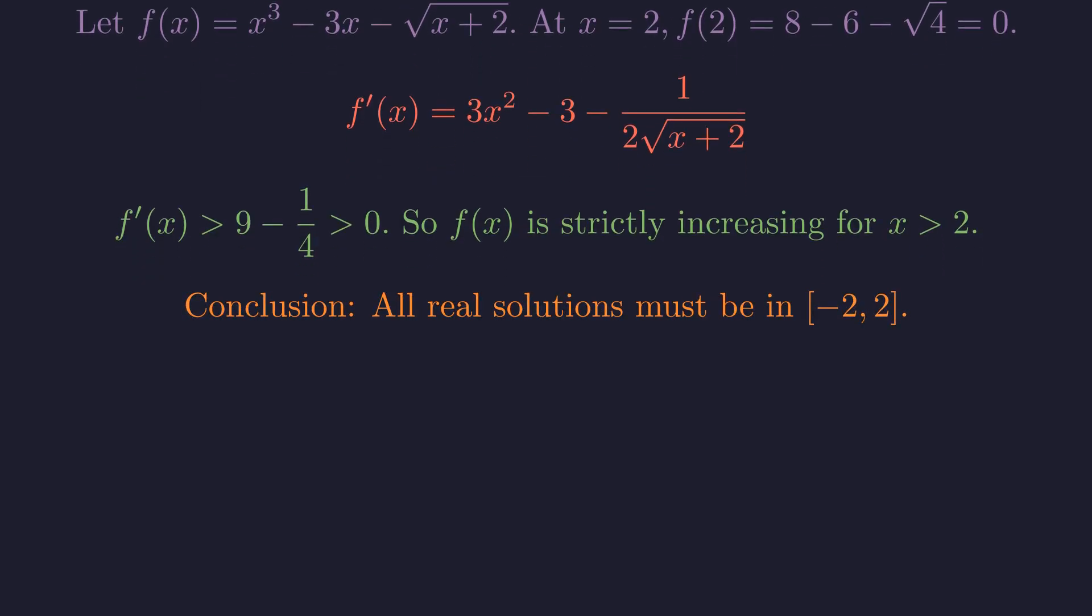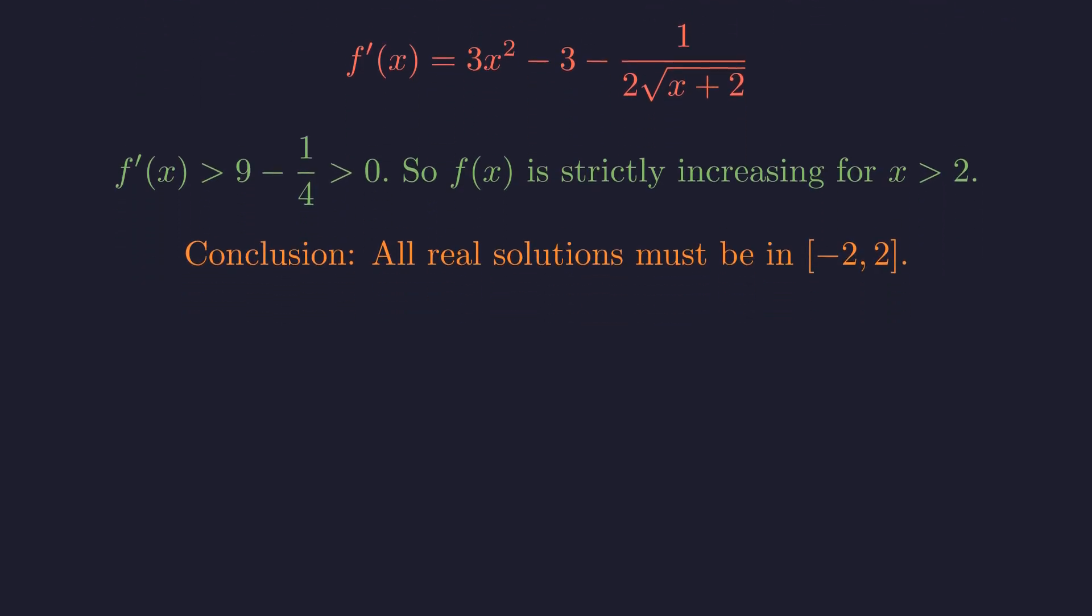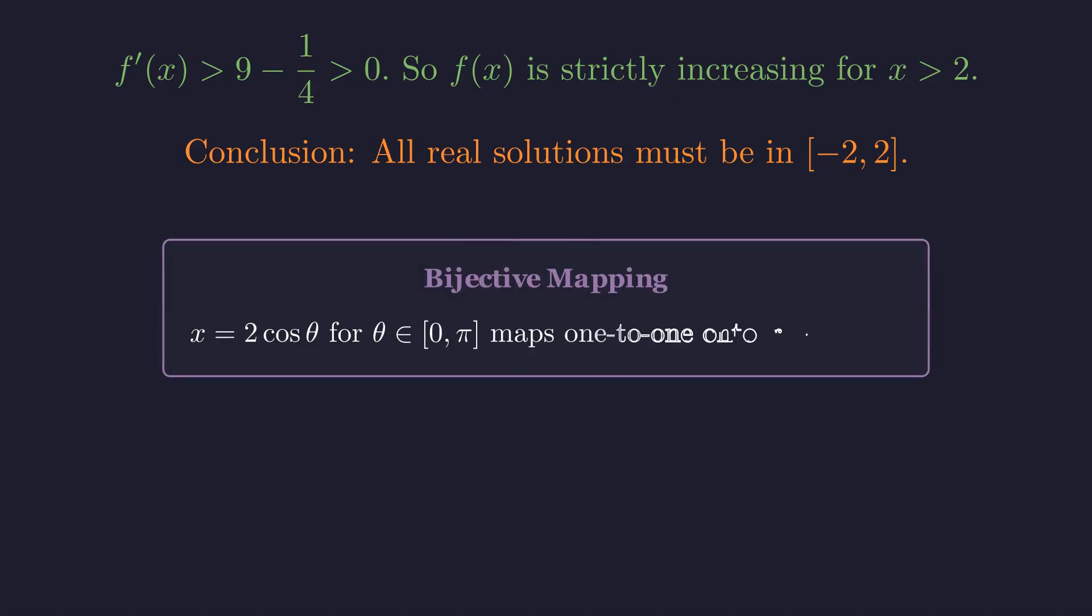So all solutions are trapped between negative 2 and 2. Here's why our substitution works perfectly. When theta ranges from 0 to pi, 2 cosine theta sweeps out exactly the interval from negative 2 to 2. Every possible solution is covered.